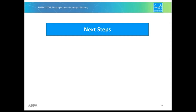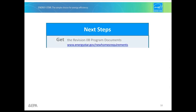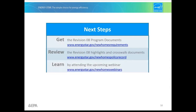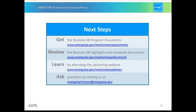This should give you a head start on Revision 8, but we've just scratched the surface. Now let's talk about next steps. Get the Revision 8 program documents by downloading them from EPA's website. Review the Revision 8 highlights document and crosswalk document to better understand what's changed. Most importantly, attend an upcoming webinar — there's much more to learn about Revision 8 — and ask questions by writing to us. Thanks for watching and for your support of the ENERGY STAR program.